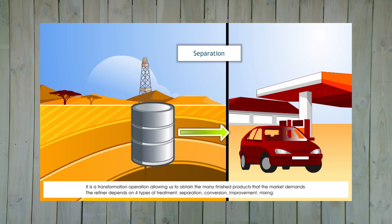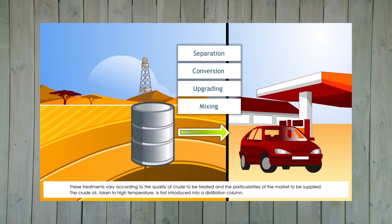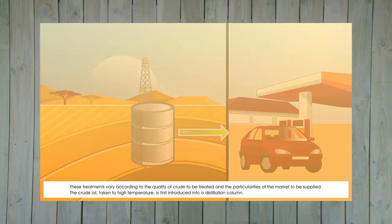The refinery depends on four types of treatment: separation, conversion, improvement, and mixing. These treatments vary according to the quality of crude to be treated and the particularities of the markets to be supplied.